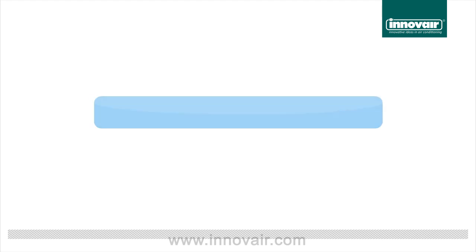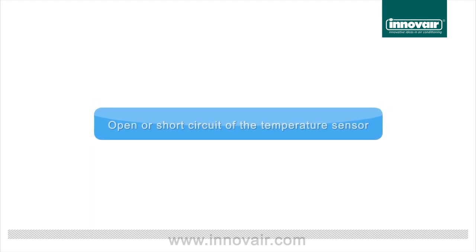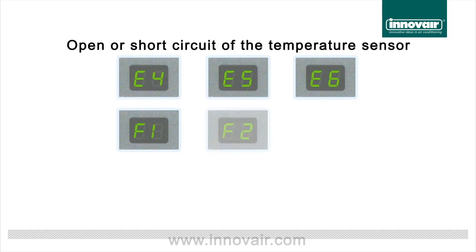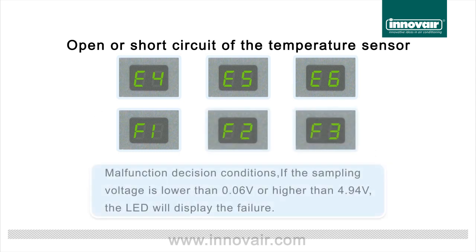When the indoor unit displays E4, E5, E6, F1, F2, or F3, those indicate an open or short circuit of the temperature sensor.